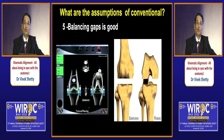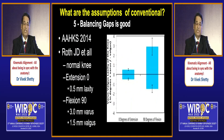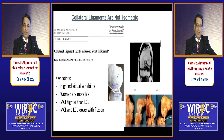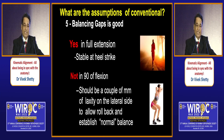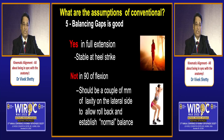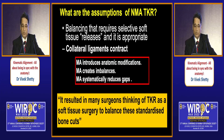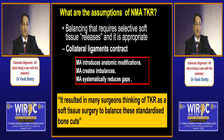Regarding gap balancing: normally you have three to four millimeters more width in flexion on the lateral side. The knee pivoting on the medial side with translation on the lateral side is possible only if you have a slightly laxer lateral side in flexion — you need a little laxity on the lateral side, not an equal flexion-extension gap. Our conventional thinking has been that TKR is a soft tissue procedure where you place the implant at the correct place and then work on the soft tissues.